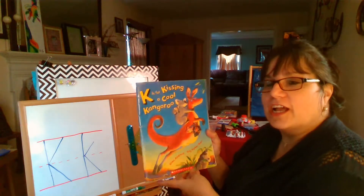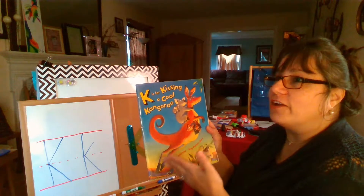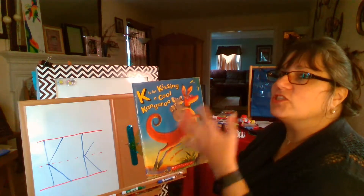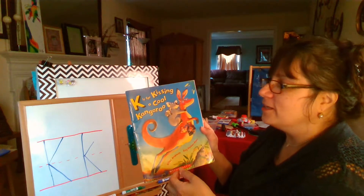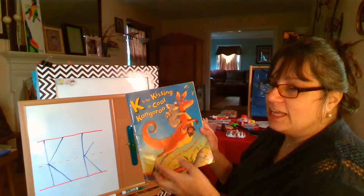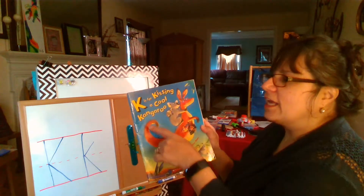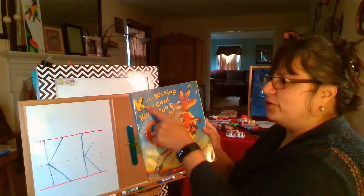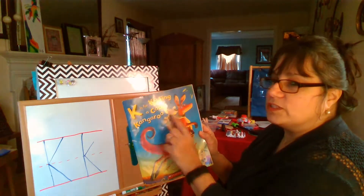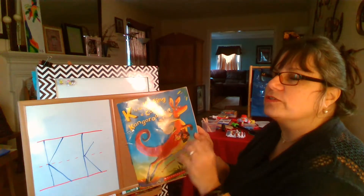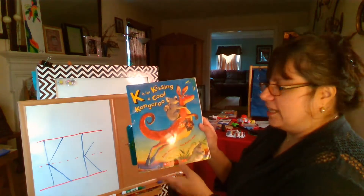That's a lot of alliteration. Alliteration is when the first sound of a lot of words in a sentence, or in a poem or in a rhyme, start with the same sound. For instance, K is for kissing a cool kangaroo — kissing and kangaroo start with the letter K. Cool doesn't start with a K, but it starts with the same sound. C can also make that sound.